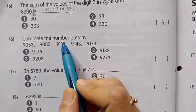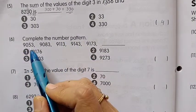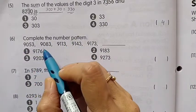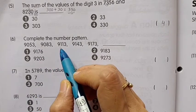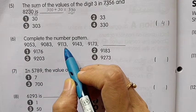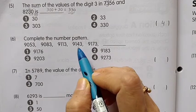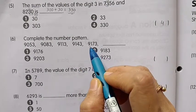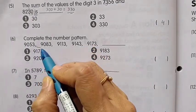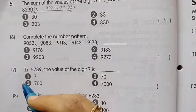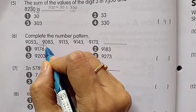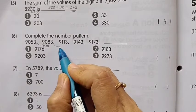Number 6: Complete the number pattern. 9053, 9083, 9113, 9143, 9173. Look at these two numbers, the difference is 30.